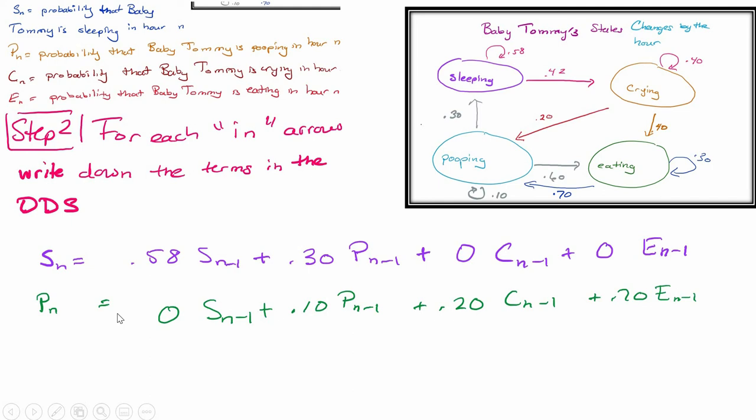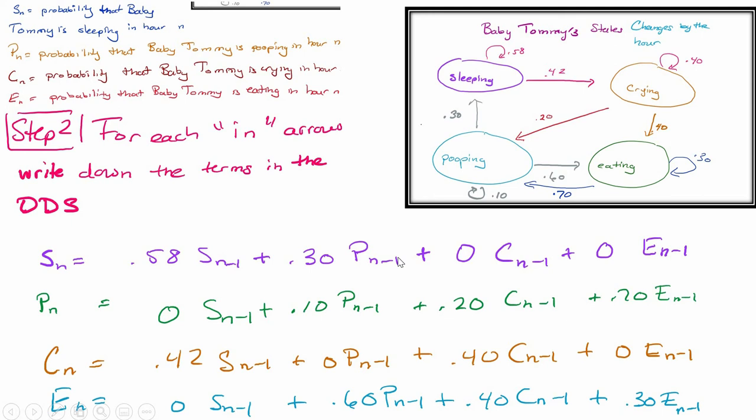For Pn, I do the same thing. I have nothing coming from sleeping to pooping, so that's a 0. 10% of pooping state stays in the pooping state. 20% of the crying state enters the pooping state, and 70% of the eating state enters the pooping state. Now I have the Pn equation. The Cn equation is done exactly the same way, and En is also done exactly the same way. You've noticed here that I've lined up the variables, doing this on purpose to make things easy for myself.